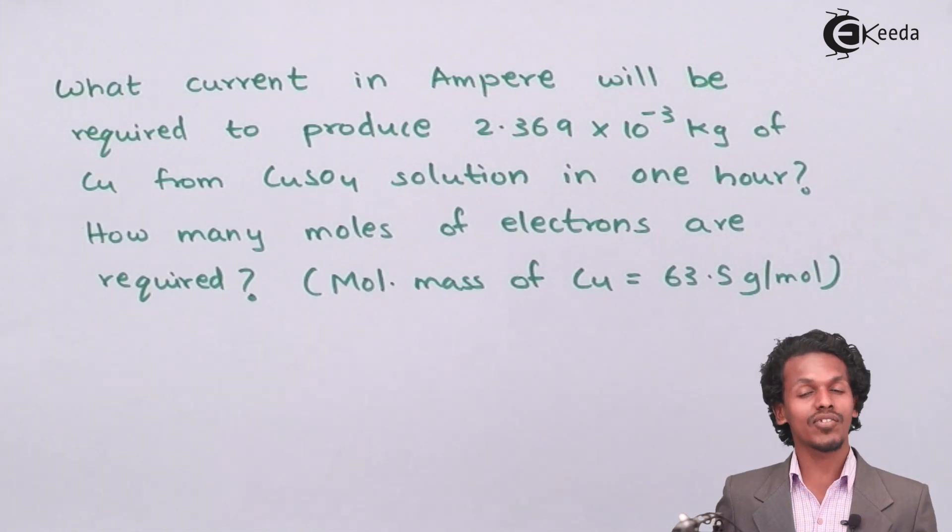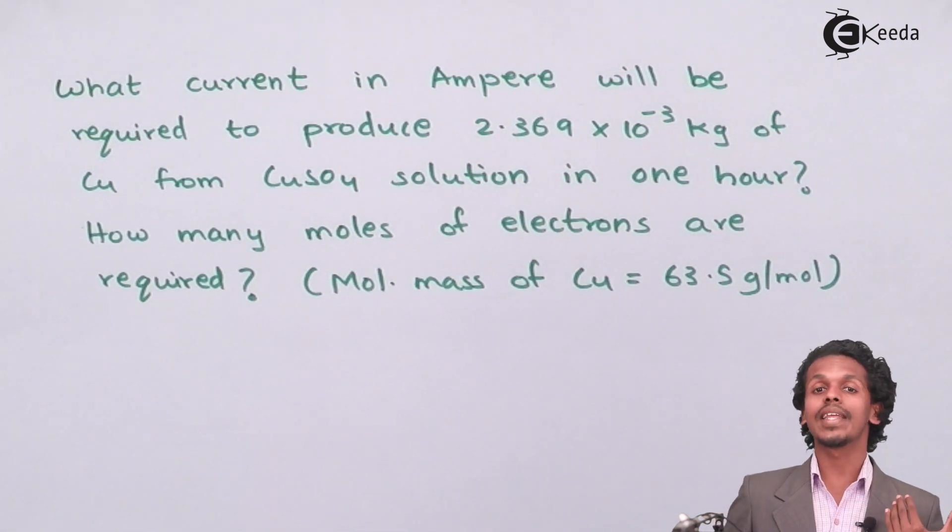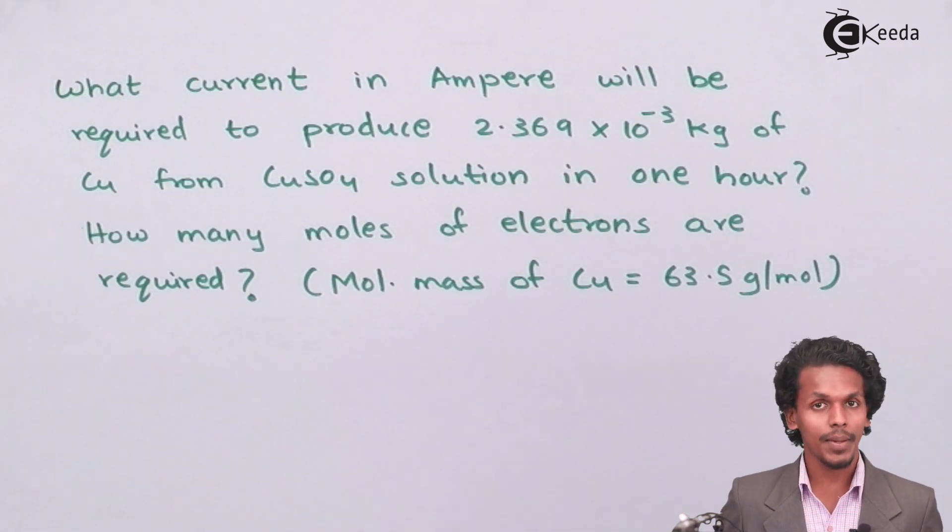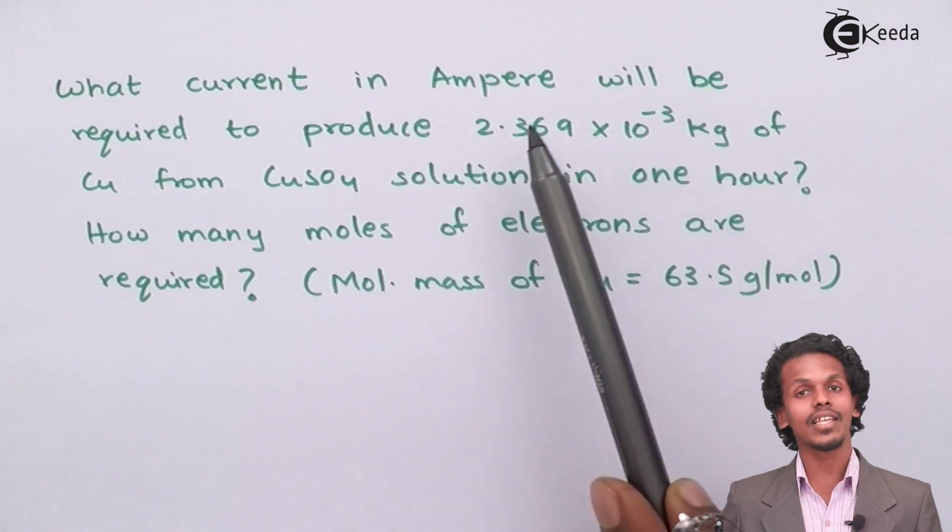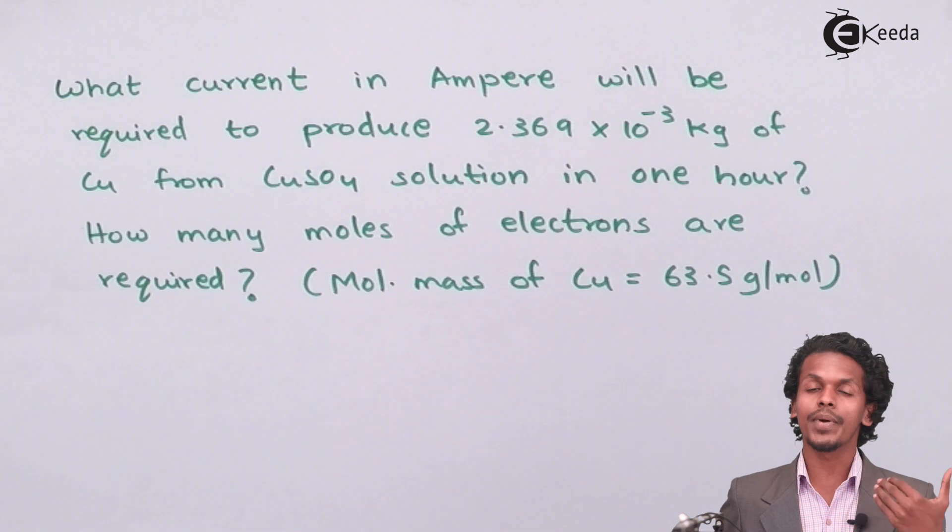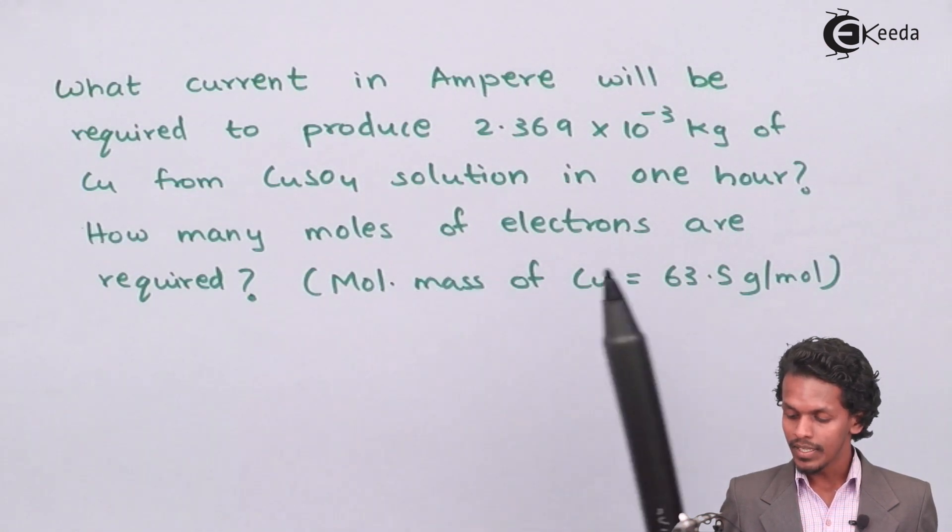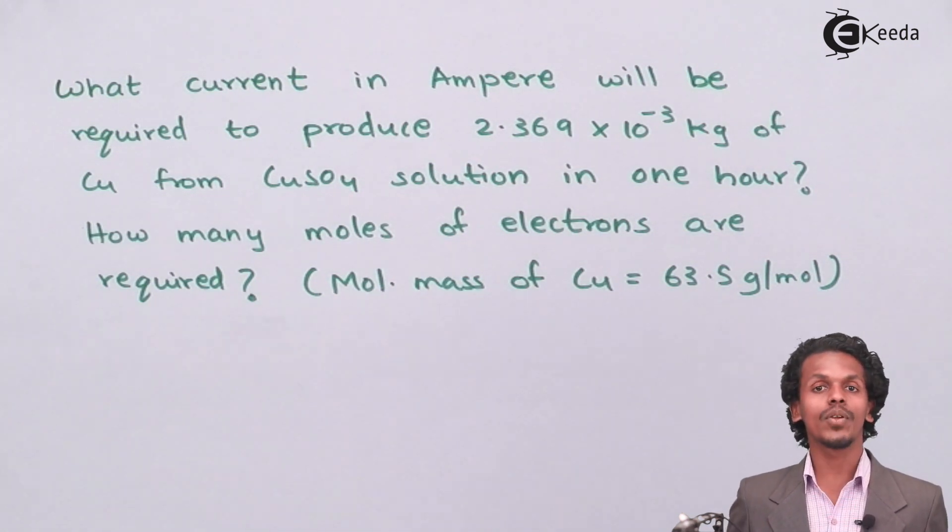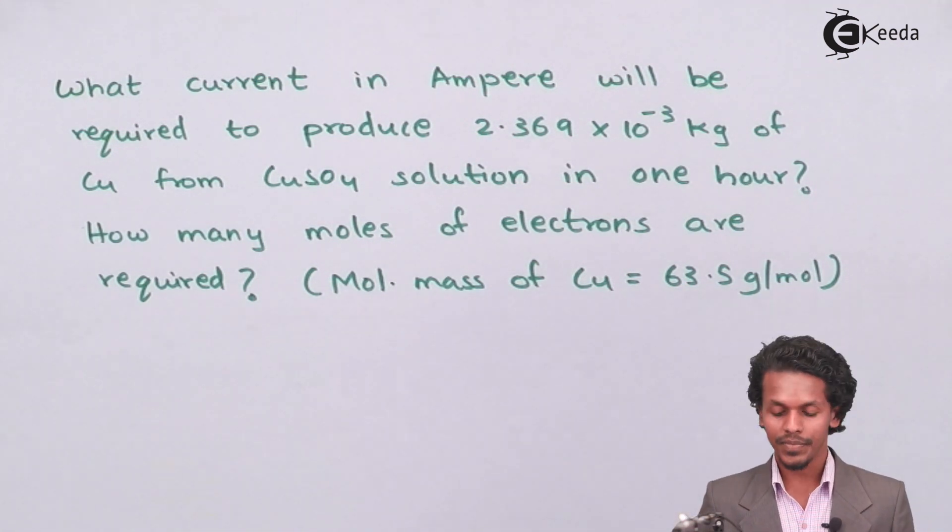The first thing that we have to do is extract the data and convert it into proper units so that we could get a proper answer. Before doing that, let us convert this kg into gram, because all the weight that is deposited on the electrode gets deposited in terms of gram. And when it comes to timing, it is present in one hour, which should be converted into seconds. And then only we could be precise to the answer.